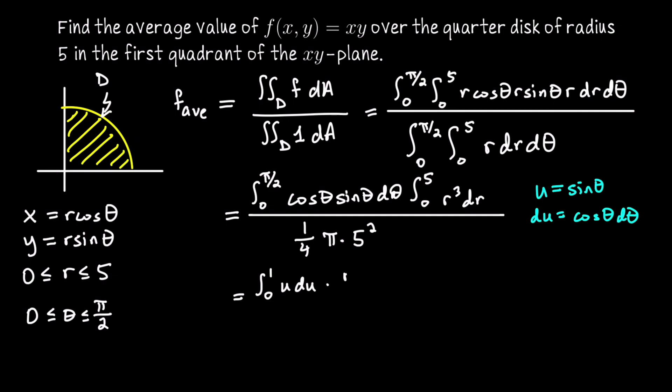So that's my new first integral after the conversion with u substitution. And then for the second one, let me go ahead and write r to the fourth divided by 4 evaluated from 0 to 5. We're going to divide that by 25 pi over 4.